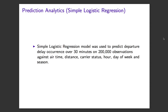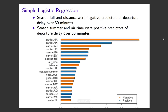A simple logistic regression model was built to predict departure delay occurrence over 30 minutes on 200,000 observations, using predictors including airtime, distance, carrier status, hour, day of week, and season. As the variable importance plot shows, carrier status was important in predicting delay over 30 minutes. Season fall and distance were negative predictors of delay, while season summer and airtime were positive predictors of delay over 30 minutes.